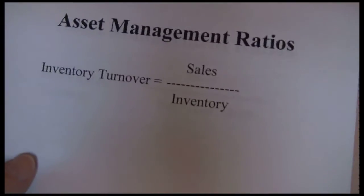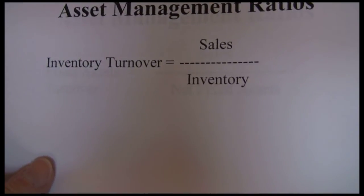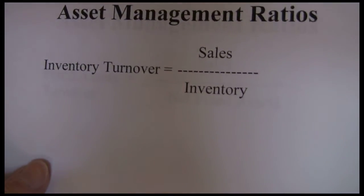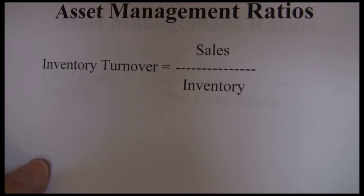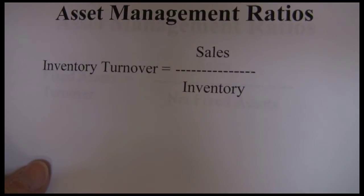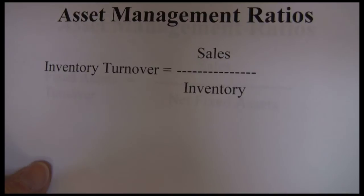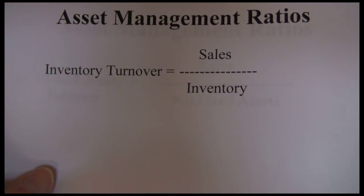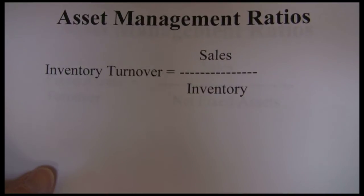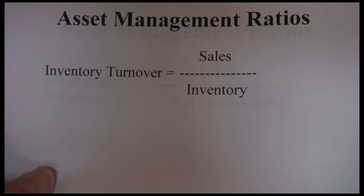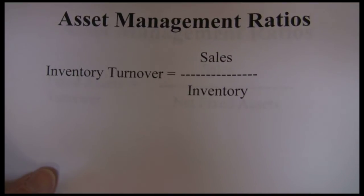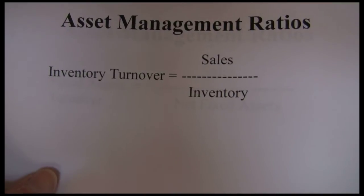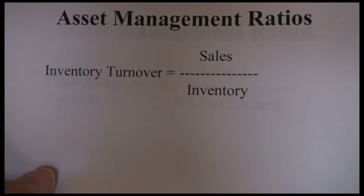We're going to start with the inventory turnover ratio, which is sales divided by inventory. Inventory turnover looks at how often we sell through our inventory each year. Ideally we want this to be a higher number — higher numbers mean we're not keeping as much inventory on the shelves as long, but instead selling it quickly and getting it into and out of our possession. The more frequently we turn over our inventory, the more often we can profit from selling it.